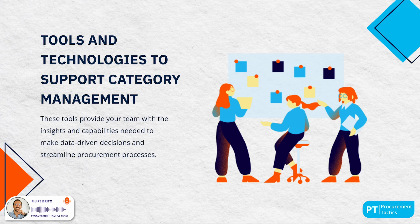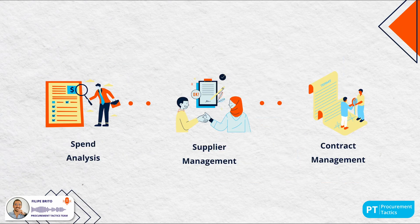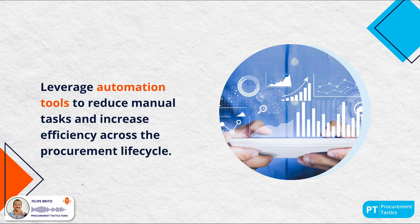Finally, implement tools and technologies to support your category management efforts. Use procurement software that offers features like spend analysis, supplier management and contract management. Stay updated with the latest technological advancements. Explore advanced analytics, artificial intelligence and machine learning applications to enhance your strategies. Leverage automation tools to reduce manual tasks and improve efficiency across the procurement lifecycle — the right tools make your team's job easier, more accurate and more efficient.